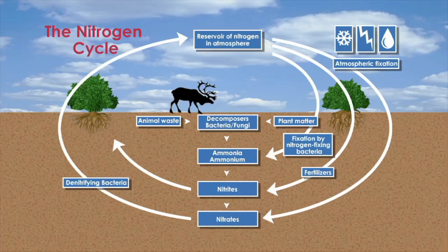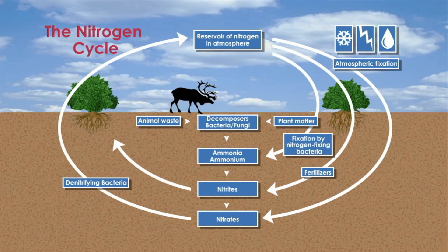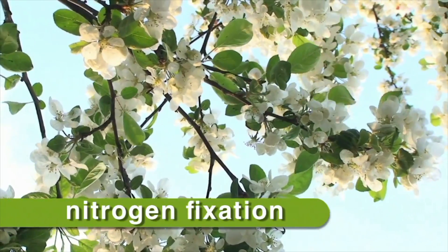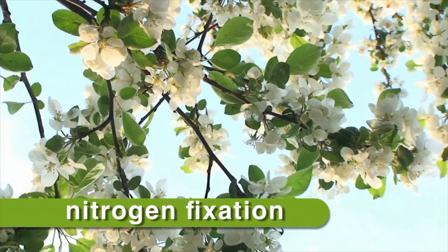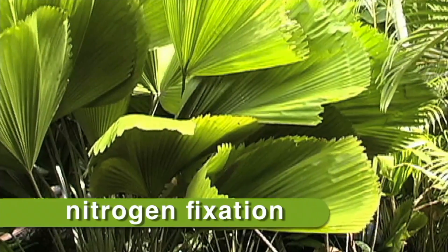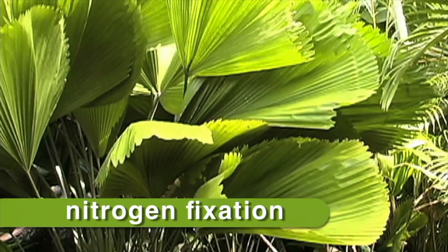There are four processes in the cycling of nitrogen through the environment: nitrogen fixation, decay, nitrification, and denitrification. Nitrogen fixation is the process of converting nitrogen to compounds that can be absorbed by plants.